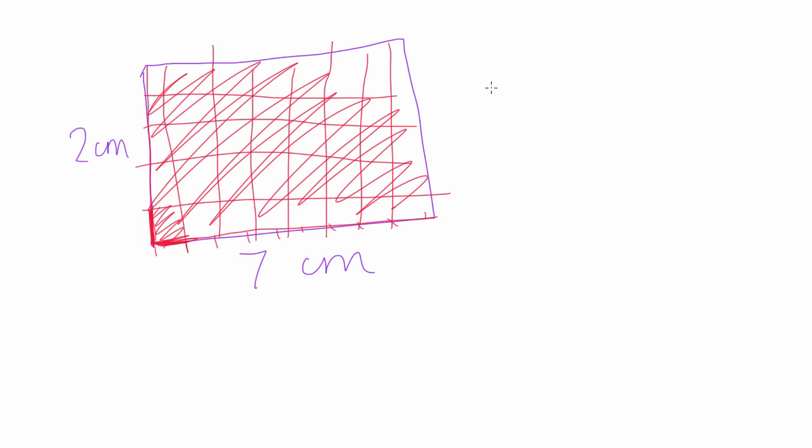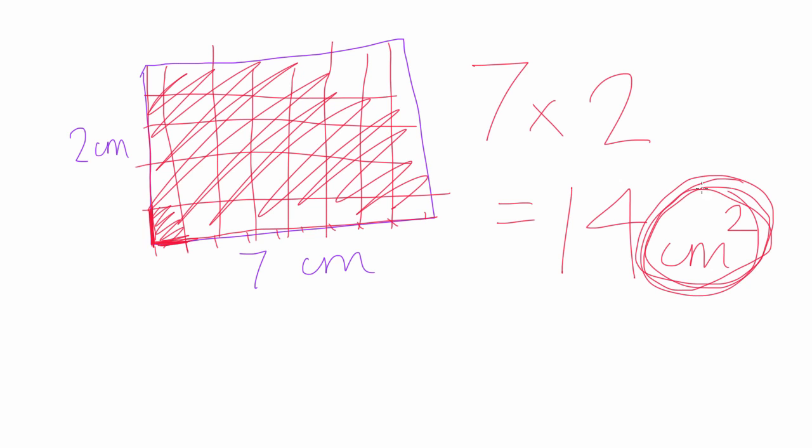So for every 7cm here, you have 2cm here, and that will help you cover the whole shape. For every 7cm, you have 2cm. That gives you, all together, 14cm squared. That's our unit for area, and you will be using it, or I will write it on your face.